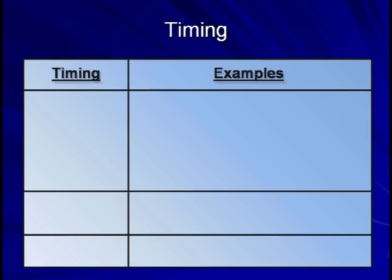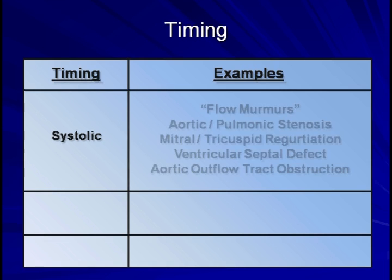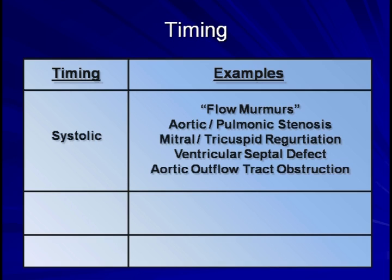Systolic murmurs are, by far, the most common. They comprise greater than 95% of all murmurs that you'll hear among hospitalized patients. Etiologies include flow murmurs caused by hyperdynamic states or anemia, aortic and pulmonic stenosis, mitral and tricuspid regurgitation, VSDs, and aortic outflow tract obstruction, which is also known as hypertrophic obstructive cardiomyopathy.